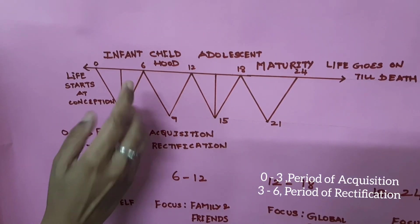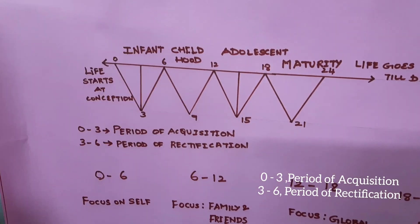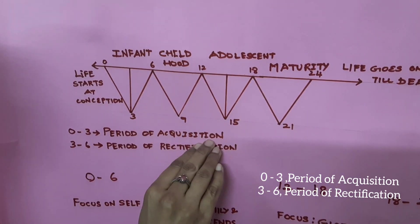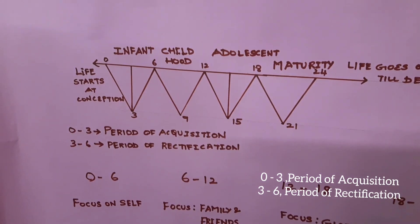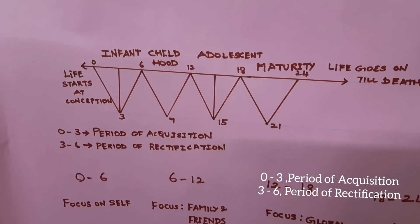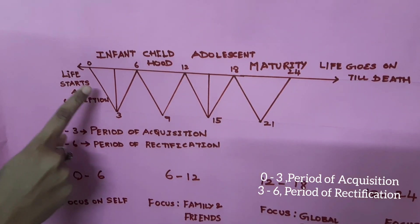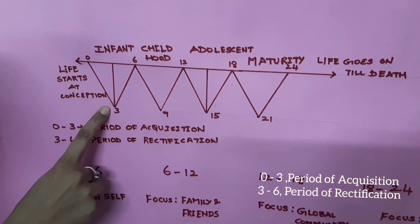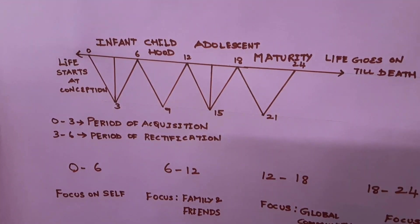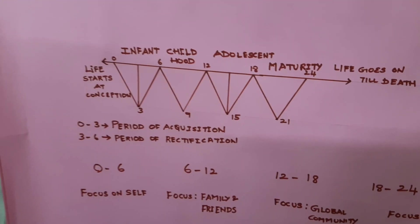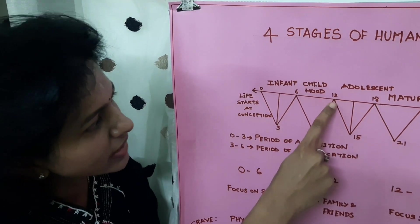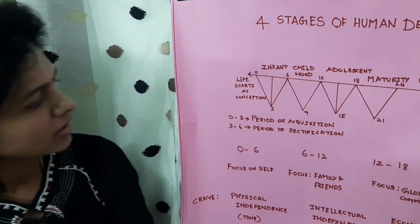Within 0 to 6, there are two subdivisions: 0 to 3, which she called the period of acquisition, and 3 to 6, the period of rectification. Whatever children observe and absorb between 0 and 3, they reflect between 3 and 6. She also noted a similarity in behavior patterns between 0 to 6 and 12 to 18.